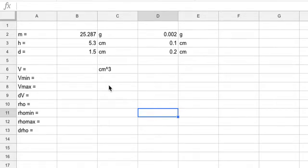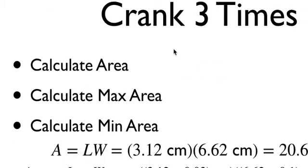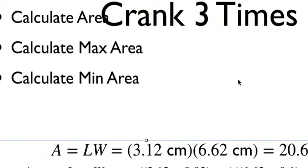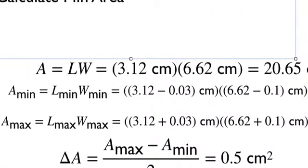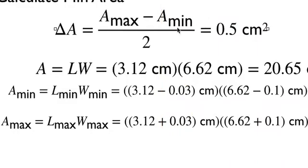I want to show you how to do crank three times calculations with a spreadsheet. Just as a reminder, crank three times in uncertainty: if I have to calculate the area, I'd calculate the area, then the maximum area, then the minimum area. And then the uncertainty is the maximum minus minimum divided by 2.